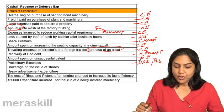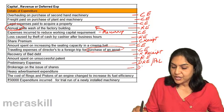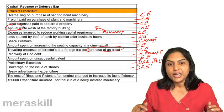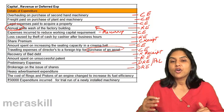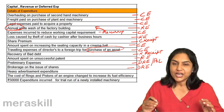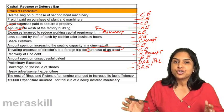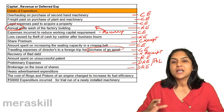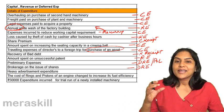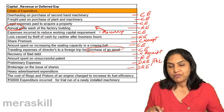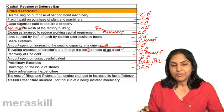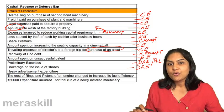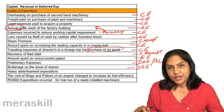Similarly, brokerage on issue of shares could be a deferred revenue expenditure. A company raises capital by issuing shares and incurs brokerage expenses. The benefit of generating capital is expected over a period of time, so the brokerage paid was written off over time. Basically it is a revenue expense, but since the benefit is expected over a longer period, it was treated as a deferred revenue expenditure.